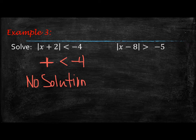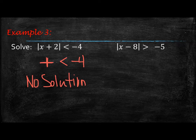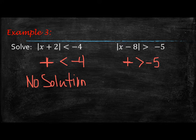On the other hand, in this example on the right, we have the absolute value of x minus 8 greater than negative 5. Now they're asking when is it going to be greater than negative 5. When we take the absolute value of anything it gives us a positive value, so when would a positive value be greater than negative 5? All positives are greater than negative 5, so this one is going to be all real numbers.